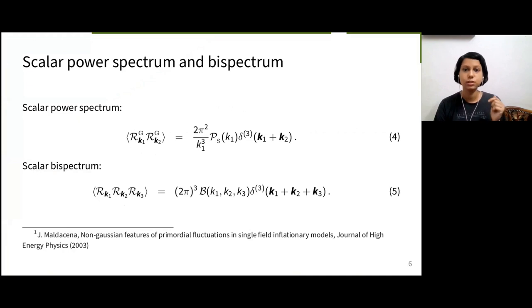Equation 5 shows the three-point correlation of RK, which is given by the bispectrum denoted by function b here. In equation 5, if we take three-point correlation of RKG instead of RK, we should get zero by the definition of Gaussian function.